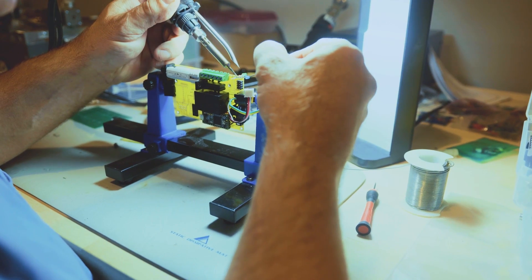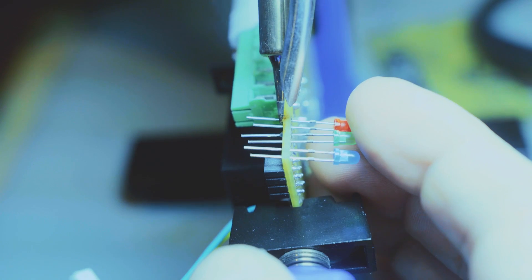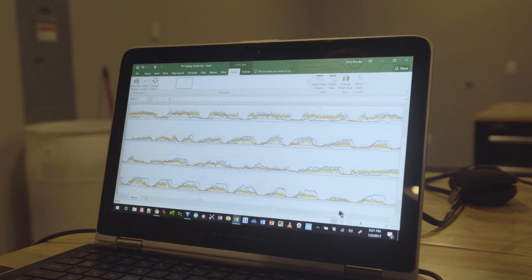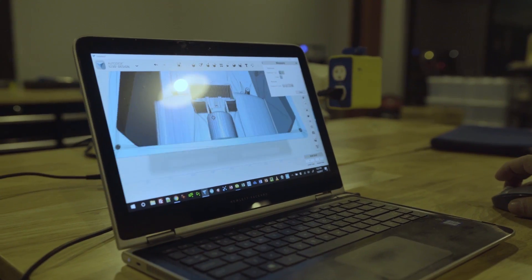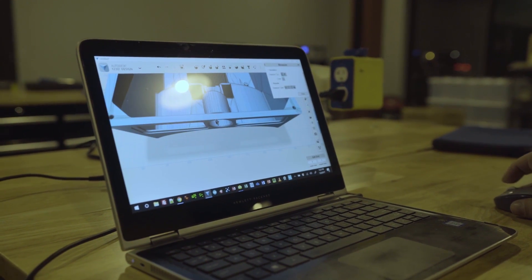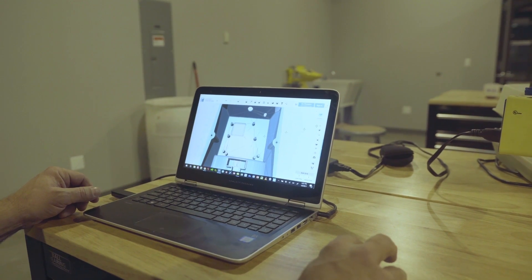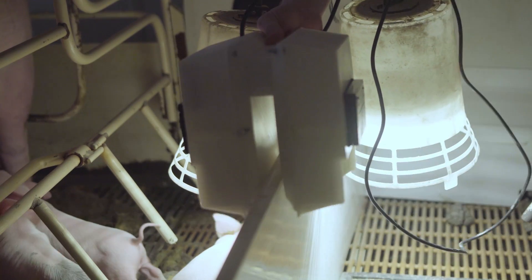Our patent-pending technology, SmartGuard, can accurately identify when a piglet is getting crushed by analyzing the wavelengths and frequencies of each and every one of their squeals. We use acoustic engineering, proprietary algorithms, and machine learning to filter and detect whether or not a piglet is in distress.